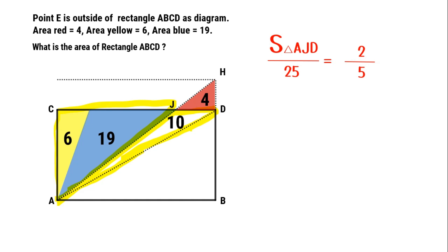So we can get the result. Area of rectangle ABCD equals 2 times (6 plus 19 plus 10), which is 70 units.